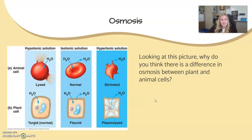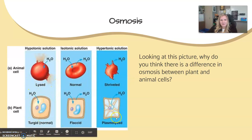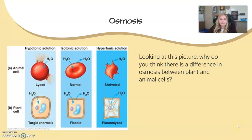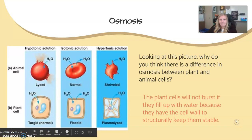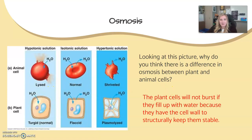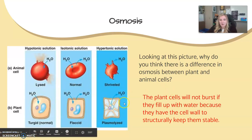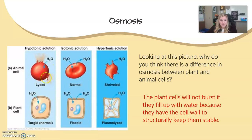Looking at this picture, thinking about osmosis and the movement of water — why is there a difference between animal cells and plant cells? Plant cells do not burst when they fill up with water or shrink because they have a cell wall that keeps them structurally stable. Animal cells, however, will burst if they get too much water, and will shrivel up if they don't have enough, becoming non-functional.